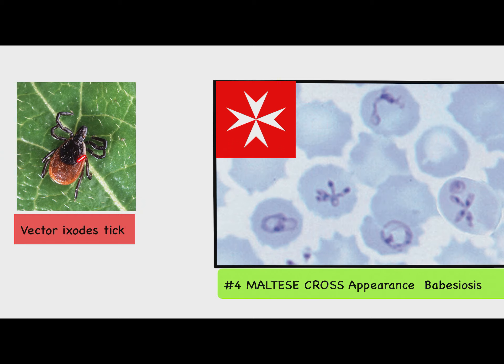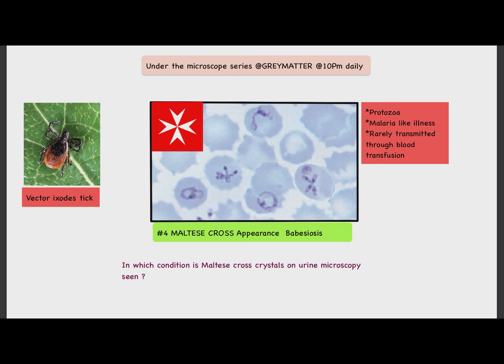Another point about babesiosis is that it is transmitted by the vector Ixodes, which is the hard tick. This was all about today's microscopic series. The question for you is: in which condition are Maltese cross crystals seen on urine microscopy?